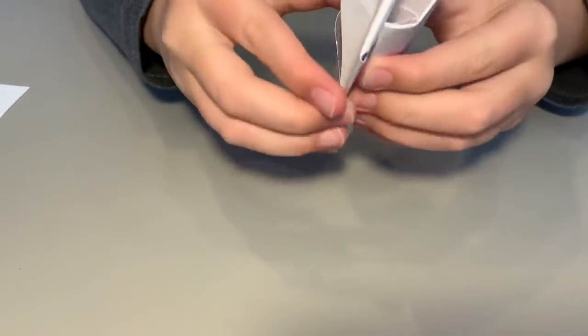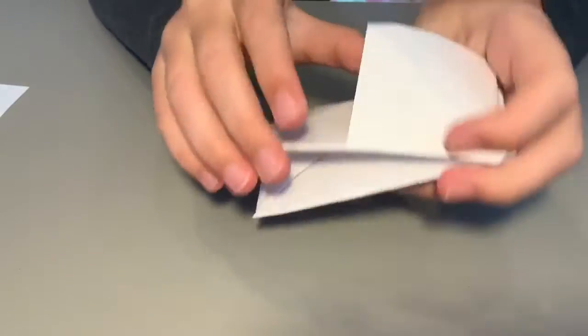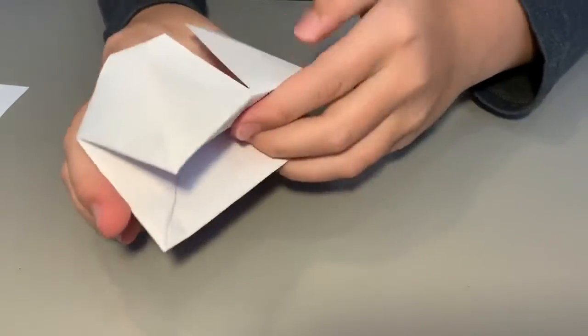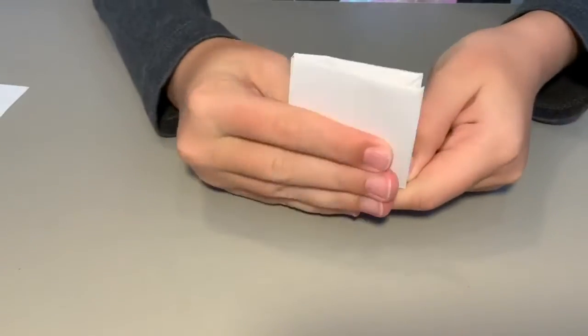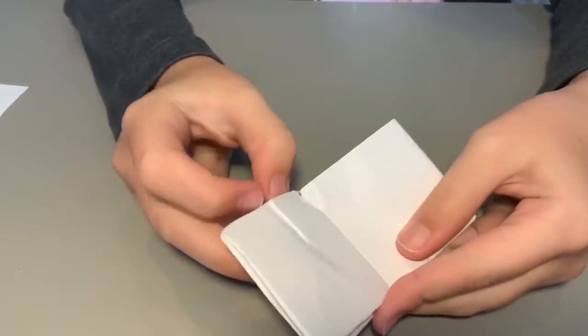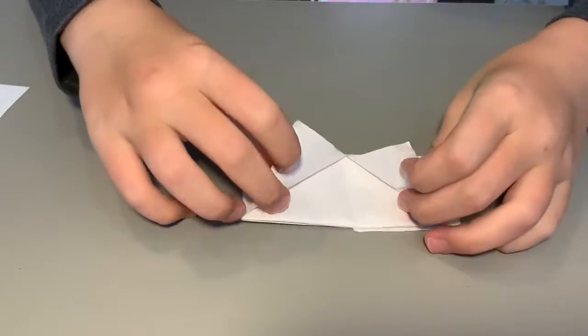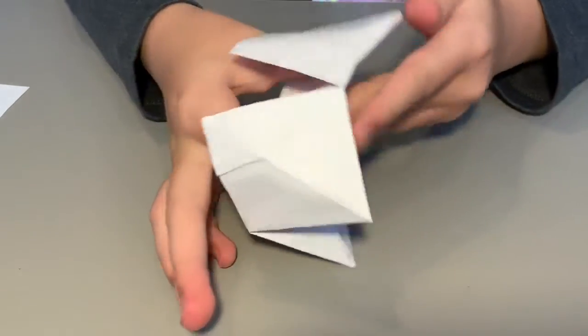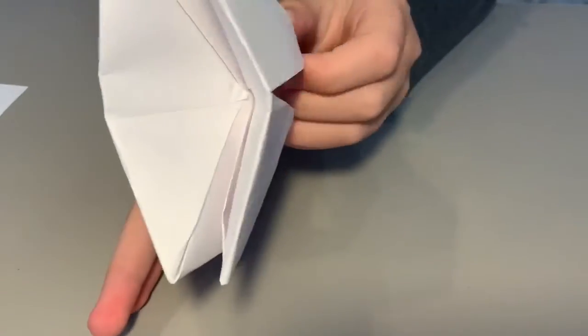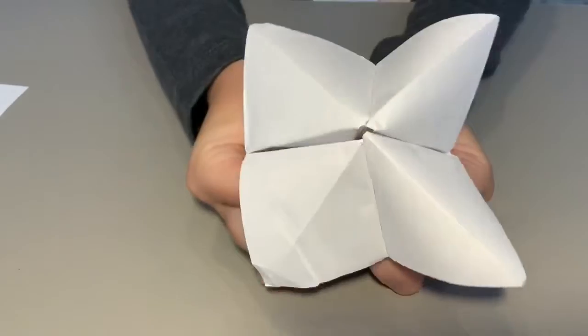Put your fingers in here, right here. I like to put it like this so you can see it. Now you see those little pockets right here? Put your fingers here and in the other ones, and you made a fortune teller.